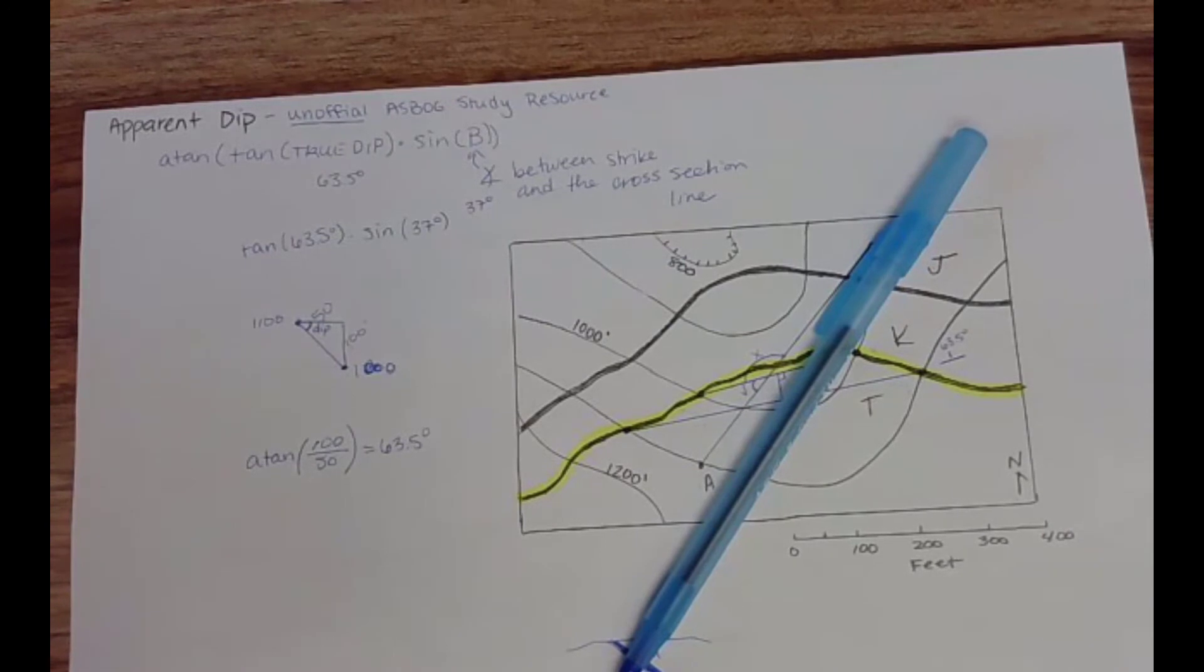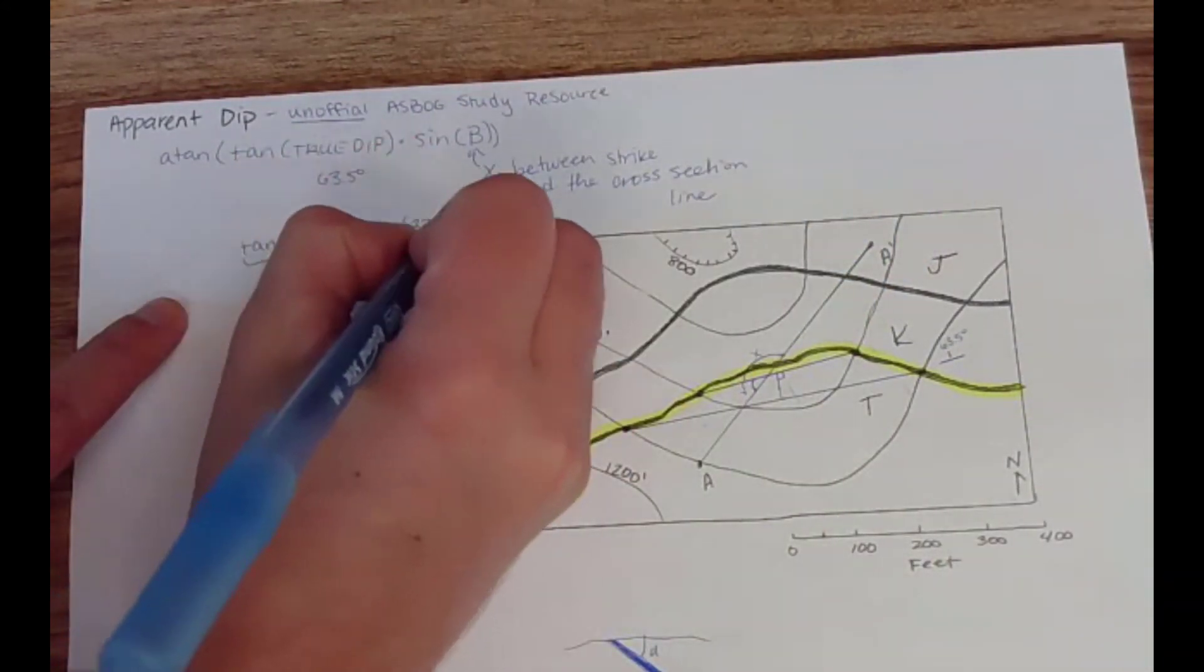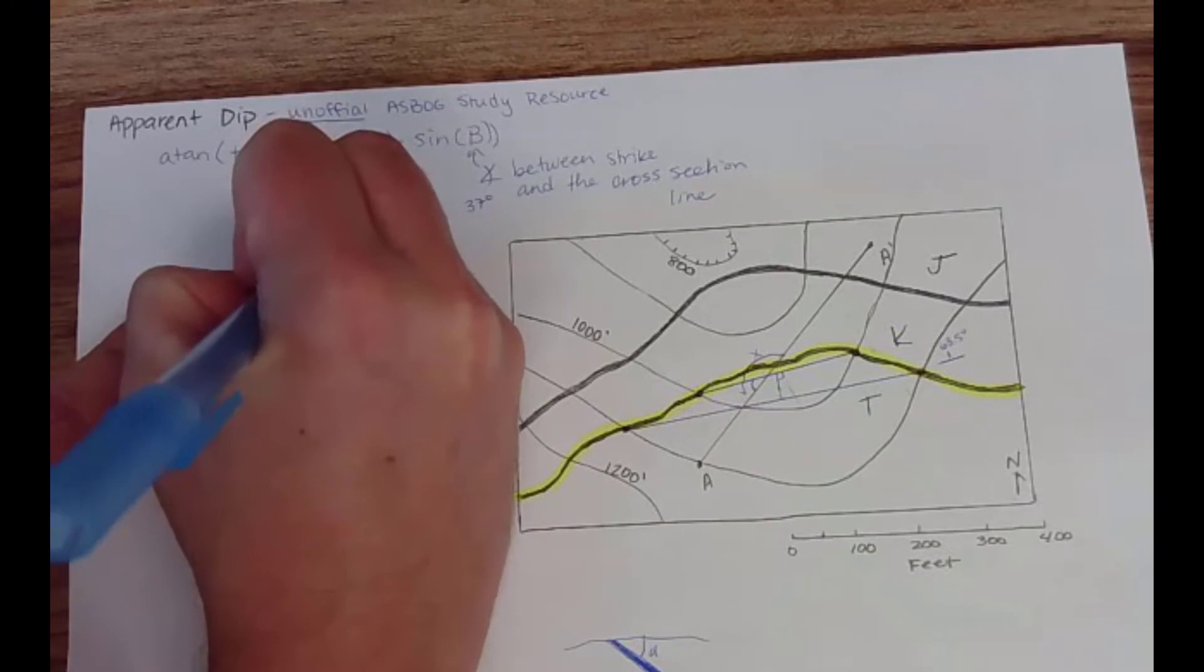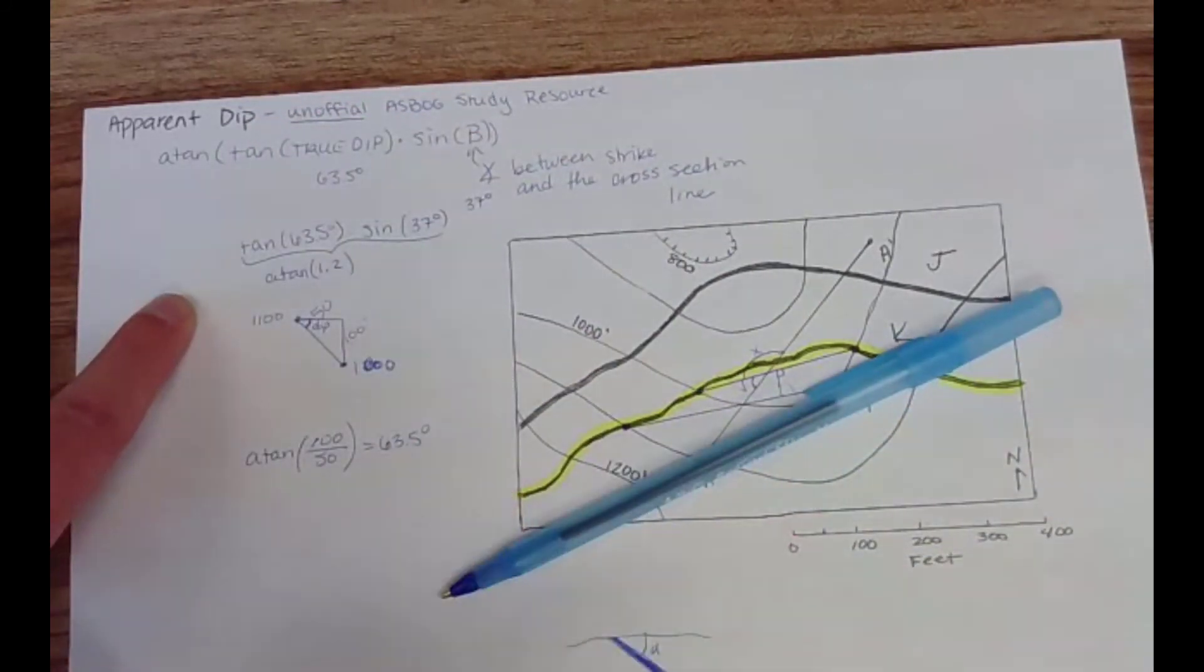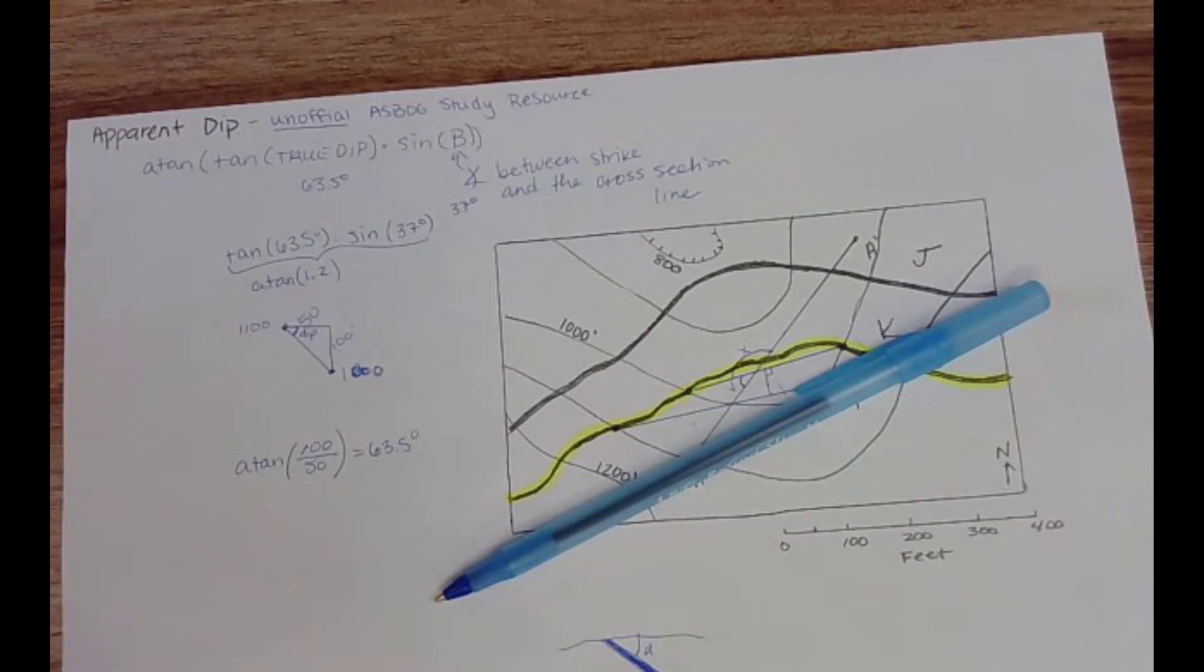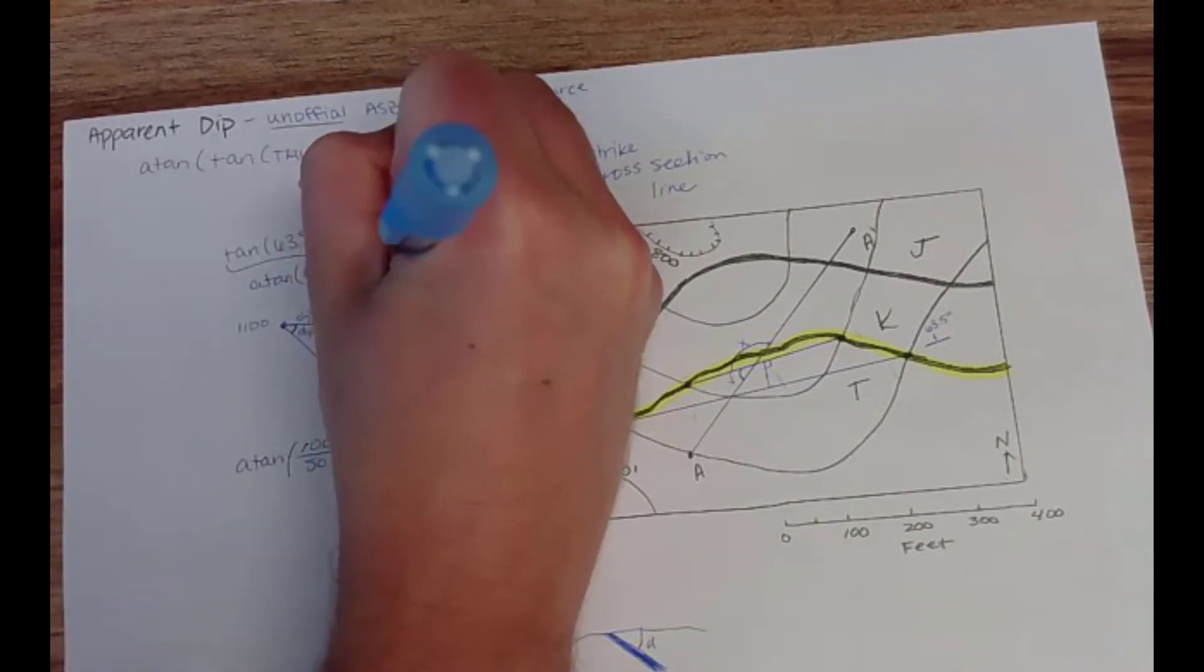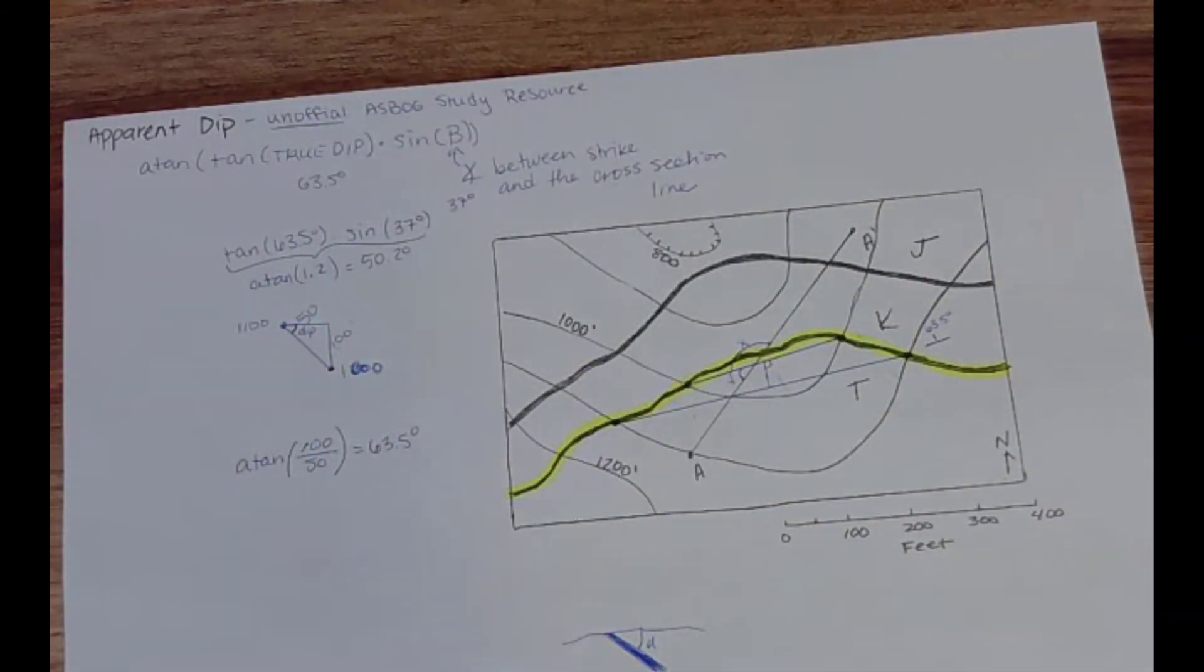And remember to have your calculator set to degrees when you're doing this. So I'm gonna have tangent 63.5 degrees, sine 37 degrees. So for this I get 1.2 and then I'm gonna take the arctan, the arc tangent of that, so arctan 1.2 in degrees and I get 50.2 degrees.